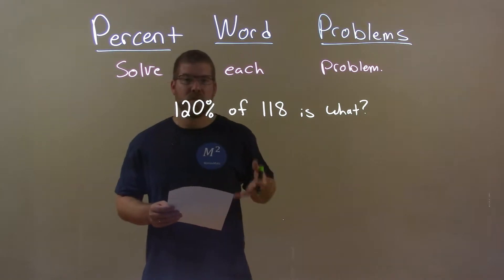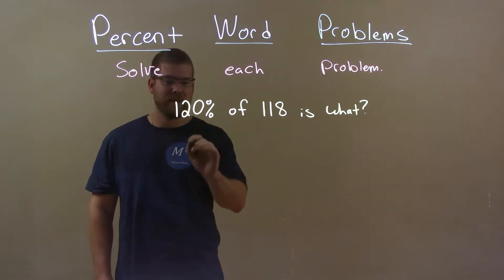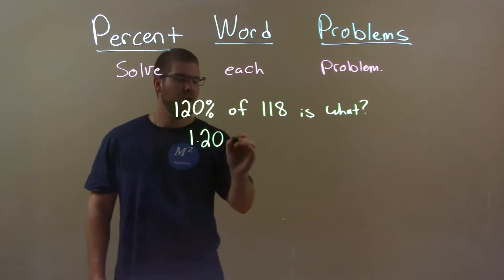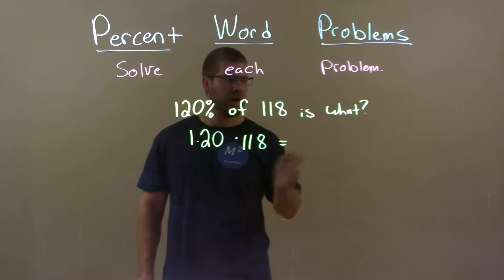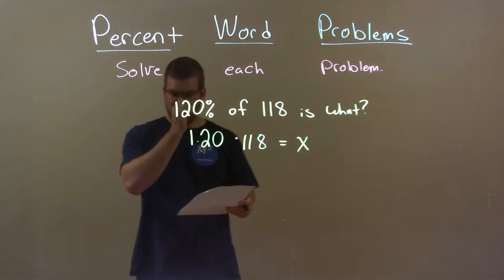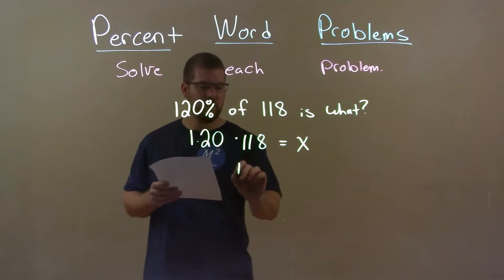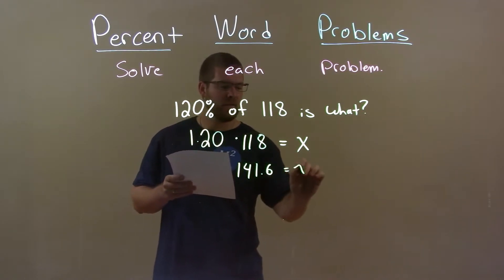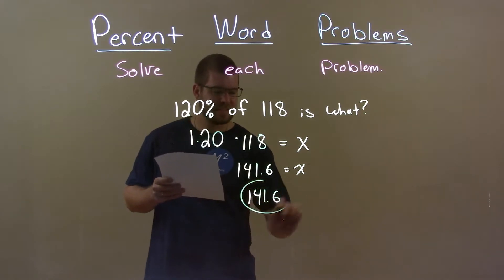Let's write this as an equation. 120% as a decimal is 1.20, times 118, is equal to x. So now I have 1.20 times 118, which comes out to be 141.6. So my answer is 141.6.